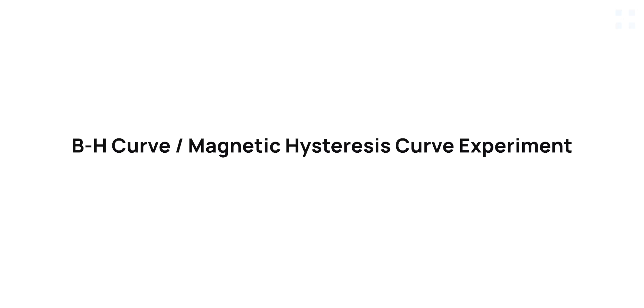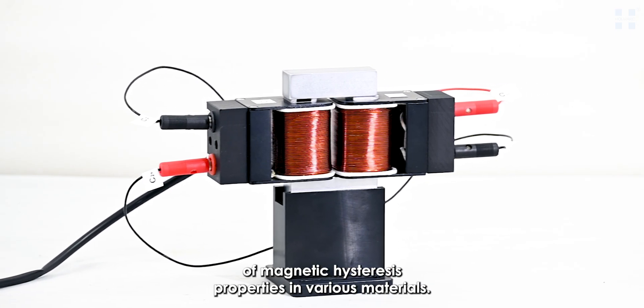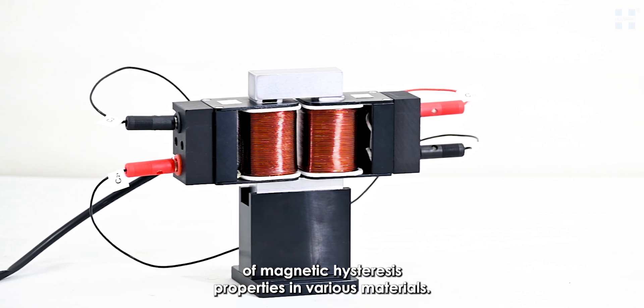Holmark's BH-Curve Magnetic Hysteresis Curve Experiment, Model HOEDEM09, is a reliable tool engineered for the detailed analysis of magnetic hysteresis properties in various materials.